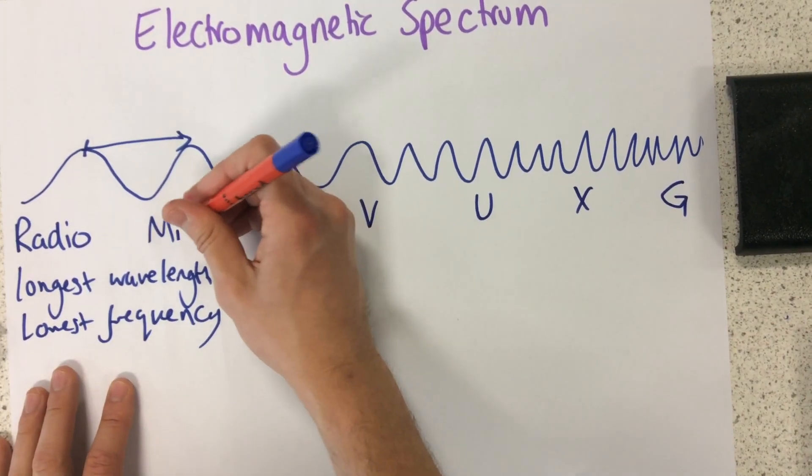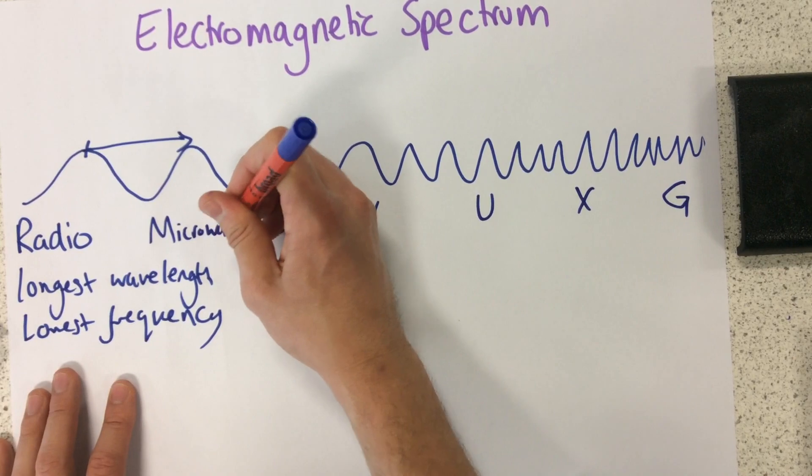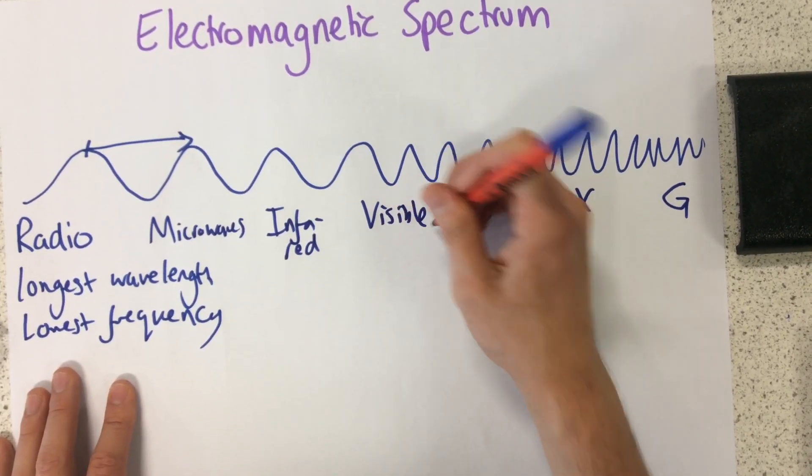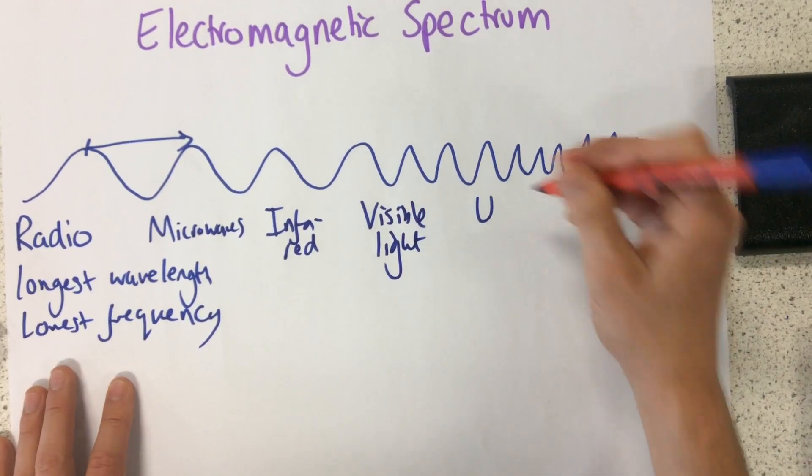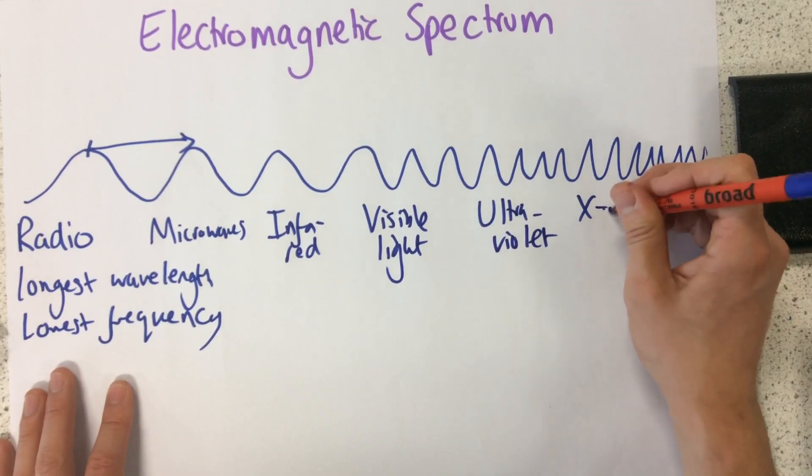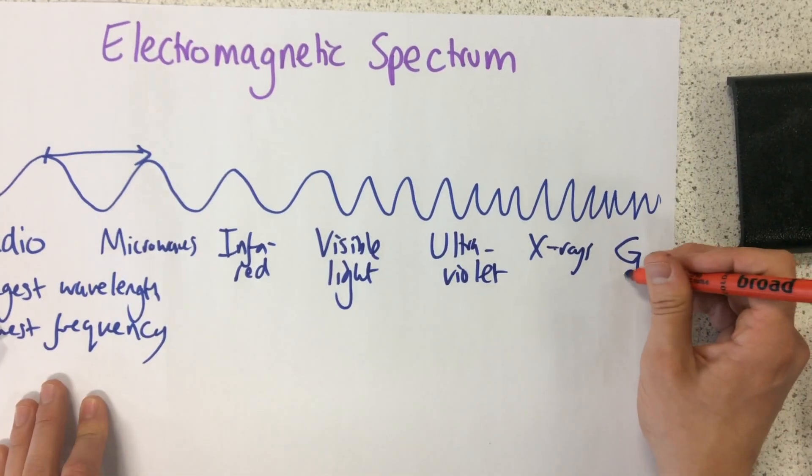So, what they stand for is radio waves, microwaves, infrared, visible light, ultraviolet, x-rays and gamma.